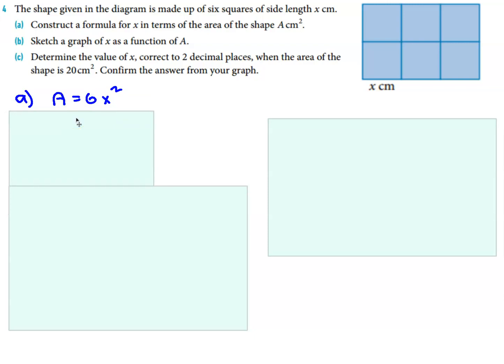Okay, so to start with, let's write the equation where x is a function of A, because that's pretty straightforward. Each of those squares has an area of x squared, and there's six of them, so the area equals 6 times x squared.